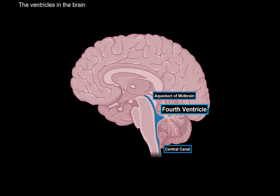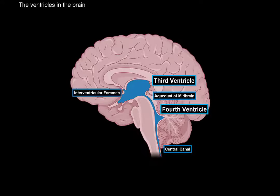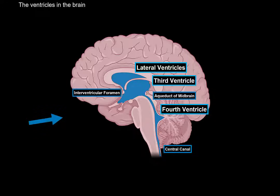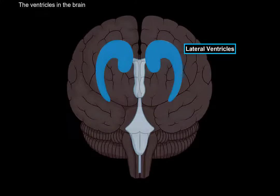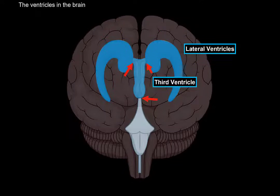Let's now look at the whole ventricular system within the brain. If you continue upwards above the aqueduct, you'll find the third ventricle. The third ventricle has communications upwards called the interventricular foramen, which communicates with the lateral ventricles. Looking at the whole ventricular system from an anterior perspective, the lateral ventricles are located laterally. The third ventricle has three communications — two up and one down, which is the aqueduct.